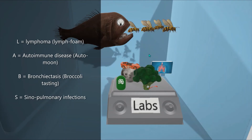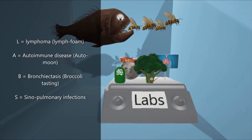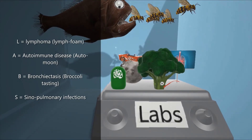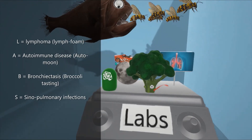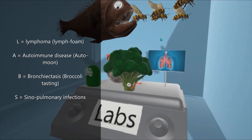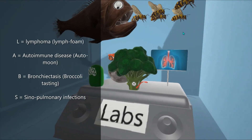If you forget that, we have it right on the scale. We have the foamy lymph node for lymphoma, the car on top of the moon for autoimmune, the broccoli — which kind of has a long tongue and is tasting — for bronchiectasis, and S for sinopulmonary infections, represented literally by the sinopulmonary infections shown in that picture.